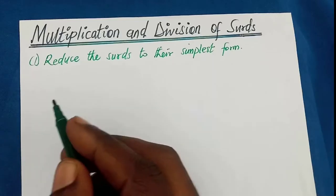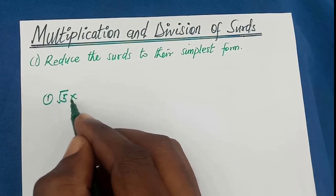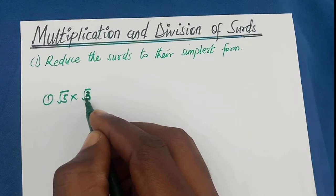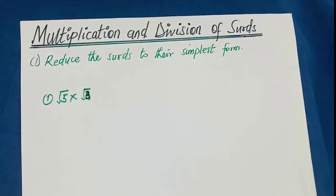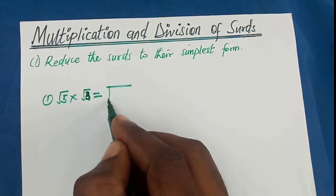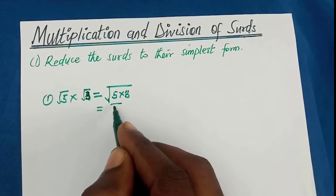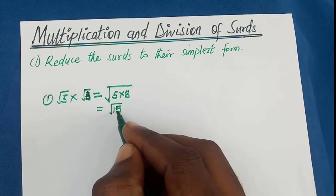Let's begin with a simple example. Assuming we have the square root of 5 times the square root of 3. The sets are already in the simplest form so there is no need to reduce them. We multiply the radicands: 5 times 3 gives us 15, so we have the square root of 15.